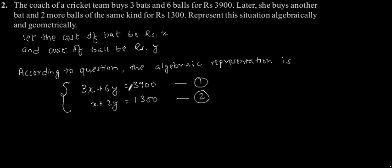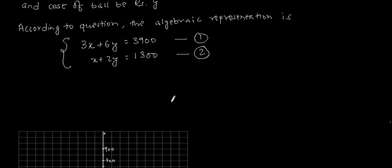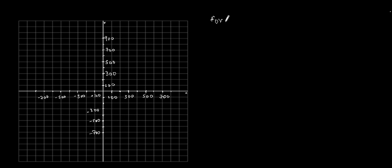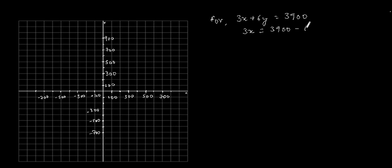Now for graphical representation, we need to make a solution table for Equation 1: 3x + 6y = 3900. This can be written as 3x = 3900 - 6y, divided by 3.